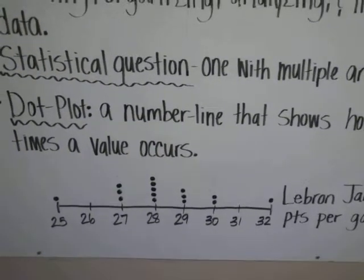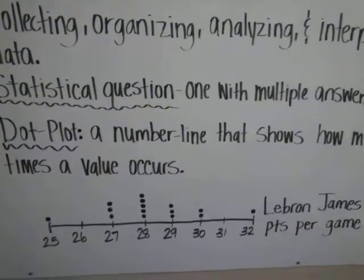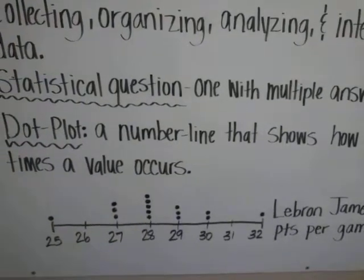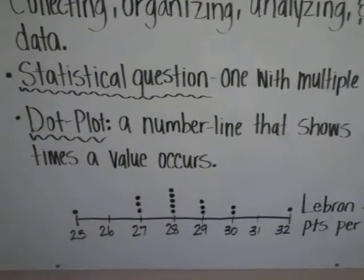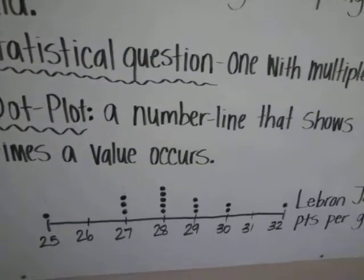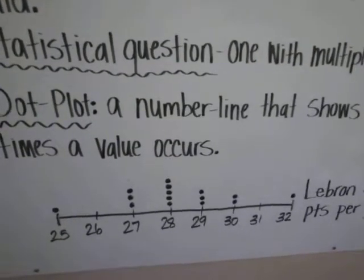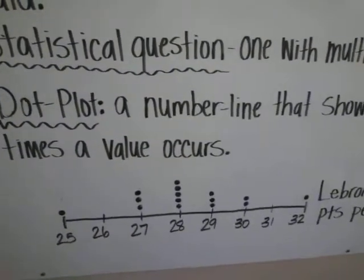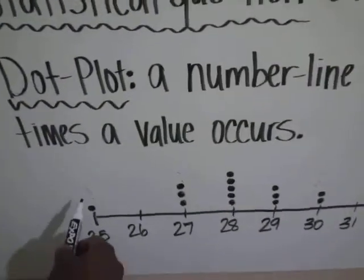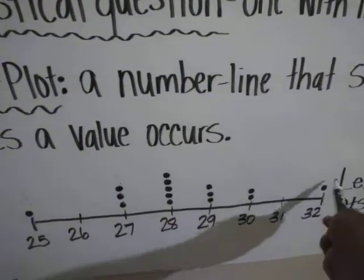There are three components we need to identify in the analyzing part of this data before we can make an interpretation. The first is: are there any gaps in this data? A gap is literally going to be a gap in the data set. Here there's a gap from 25 to 27, and there's also another gap from 30 to 32.